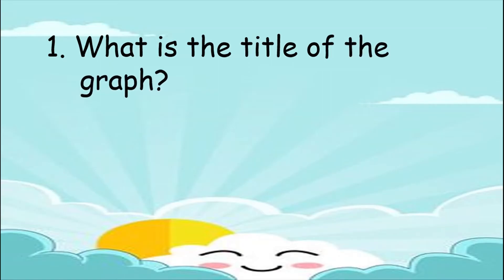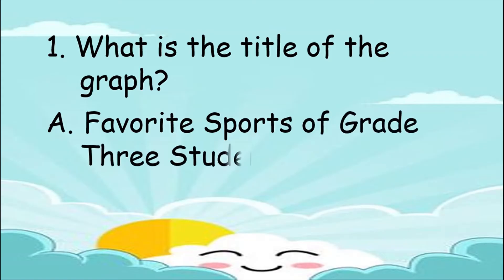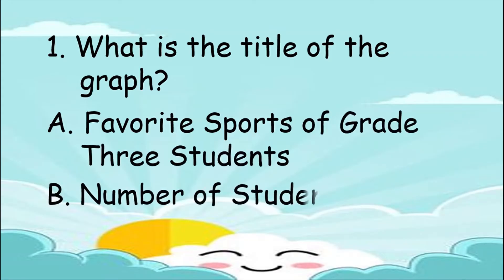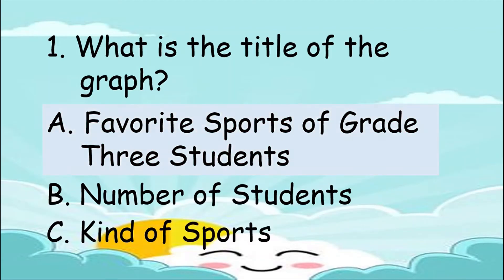For number 1, what is the title of the graph? Is it A. Favorite sports of grade 3 students, B. Number of students, or C. Kind of sports? The answer is letter A: Favorite sports of grade 3 students.